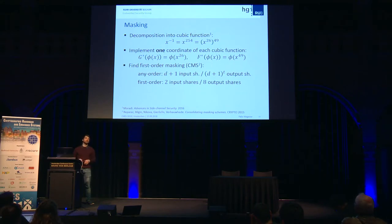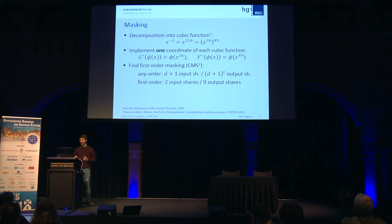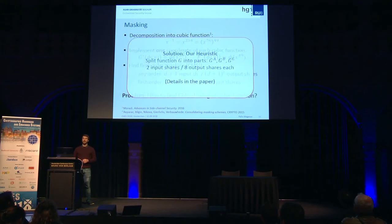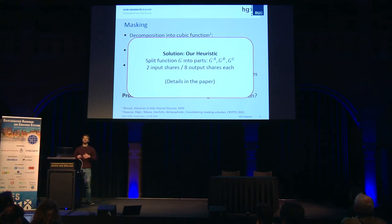For first-order security using the consolidated masking scheme, we need two input shares, and the minimal number of output shares we can achieve is eight. We developed a completely new heuristic: instead of sharing one cubic function in one go, we split it into parts. For each part it is guaranteed that the minimal bound holds, so each part can be shared with exactly the minimum number of eight output shares.